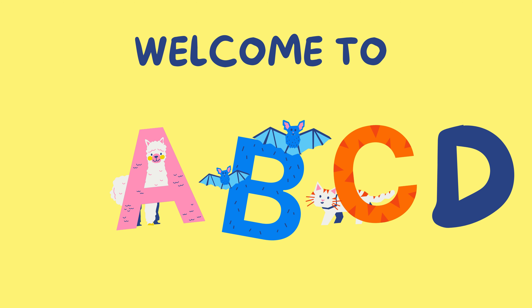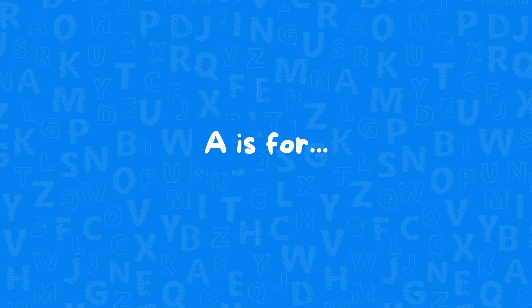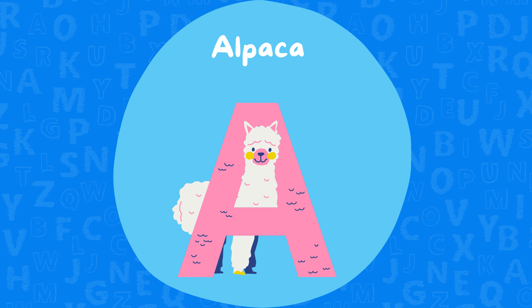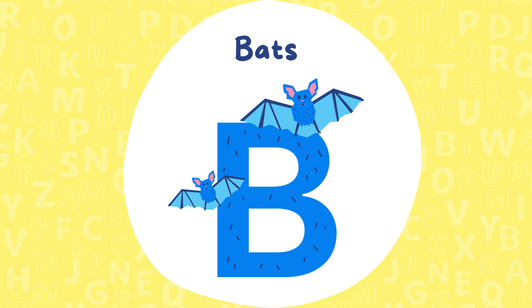Welcome to ABCD One Mala. A is for Alpaca. A L P A C A, Alpaca. B is for Bats. B A T S, Bats.